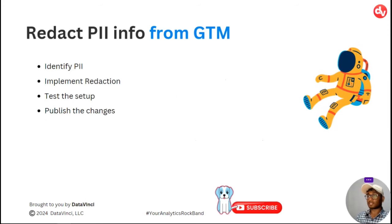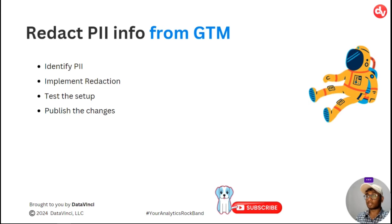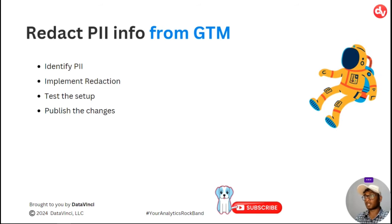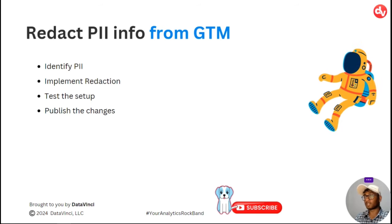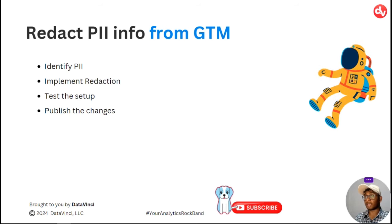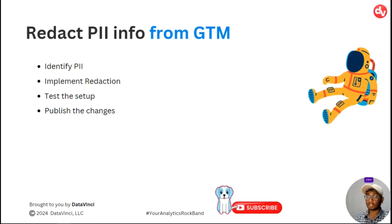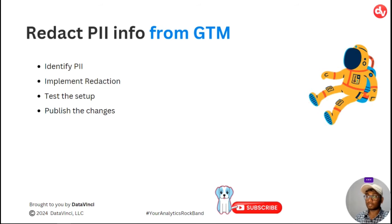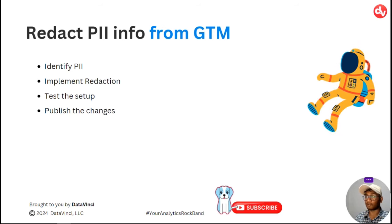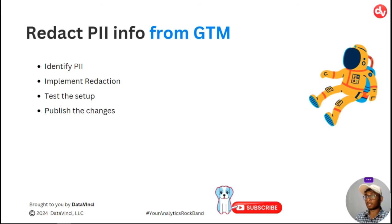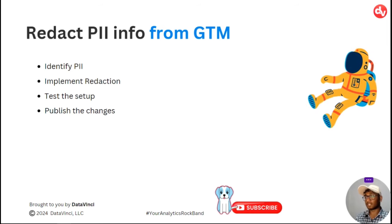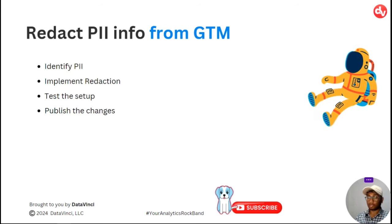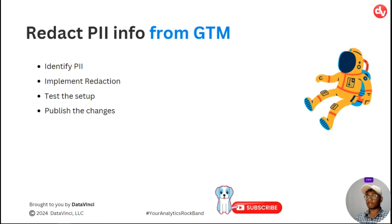Now for the second method — the GTM method. The steps are: first, identify the PII and where it is coming from; second, implement the redaction script in GTM; third, test the setup; and fourth, publish the changes. Let's jump into GTM to see how to implement the redaction logic.